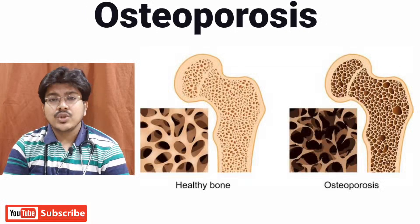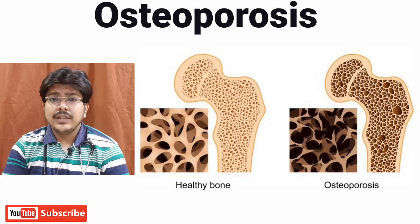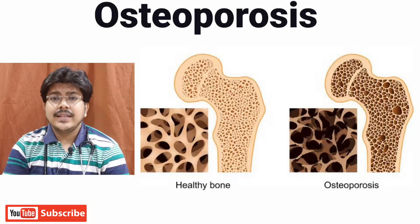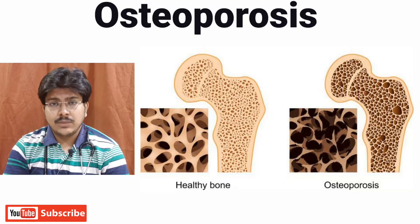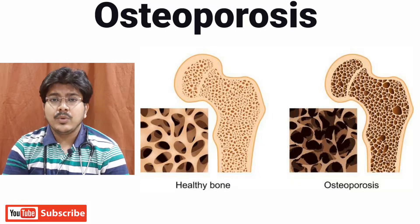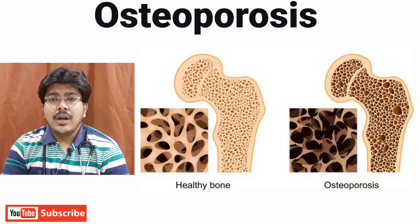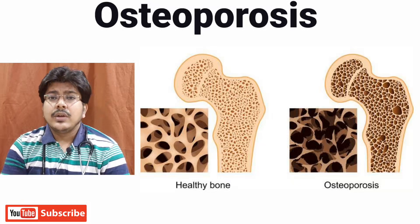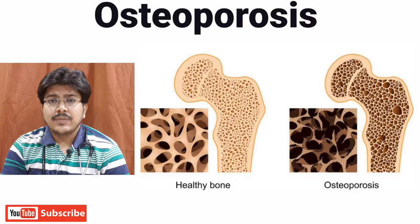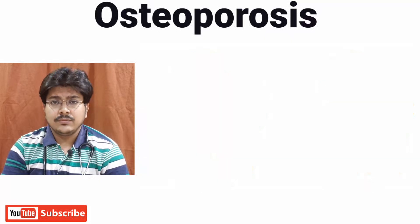What is Osteoporosis? Osteoporosis is a condition where the bones become brittle and weak. In this diagram we can see two types of bone: healthy bone and osteoporotic bone. In osteoporotic bone there is a decrease in mineral density, due to less deposition of calcium and increased resorption of the bone.